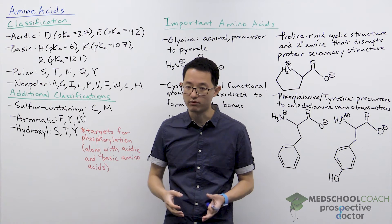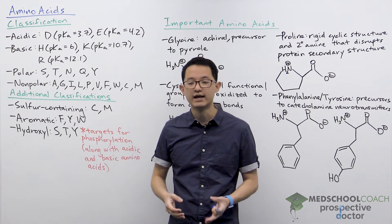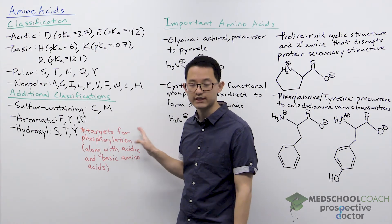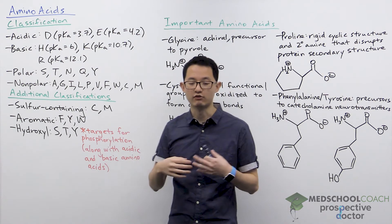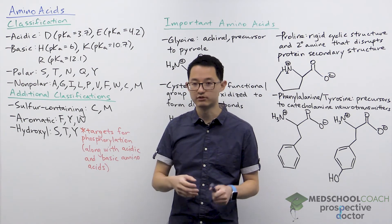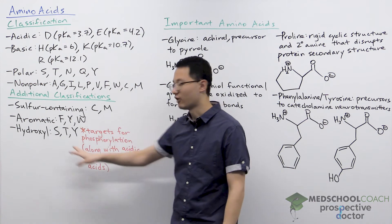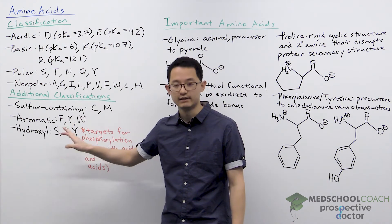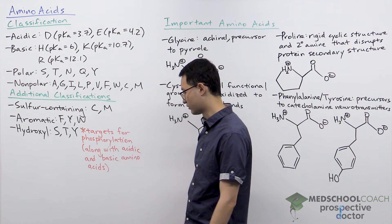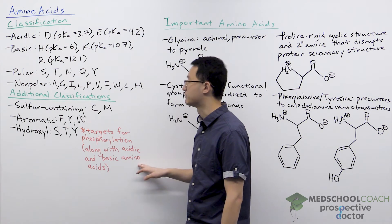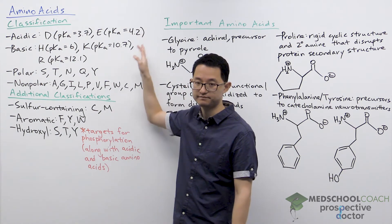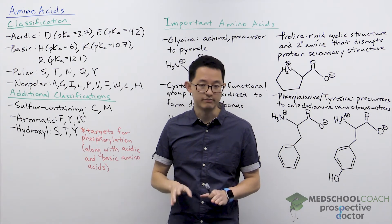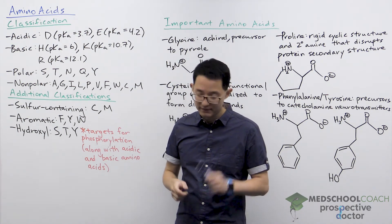This OH functional group is very important in biology because hydroxyl groups are targets for protein phosphorylation. If you want to add a phosphate group onto a protein, it often happens on one of these amino acids with a hydroxyl group, though sometimes it will also happen with the acidic and basic amino acids. Those are the different ways of classifying amino acids that you want to know for the MCAT.